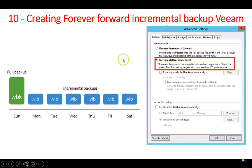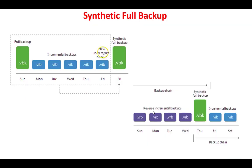You can see we can set the forever forward incremental backup in the console. As you can see from the picture, this is the view for forward incremental backup. I will show you in a demonstration video how we set these types of backups. The second type is called synthetic full backup.